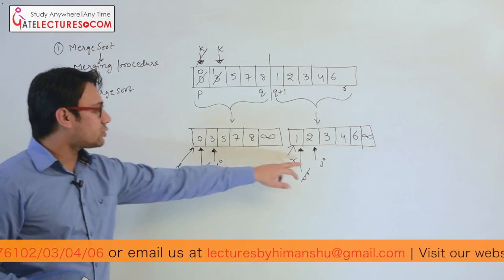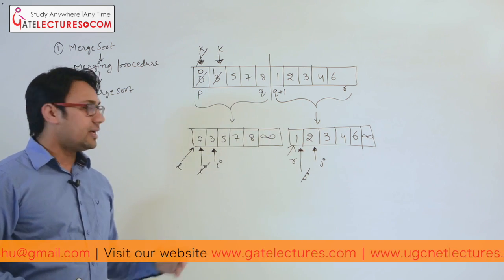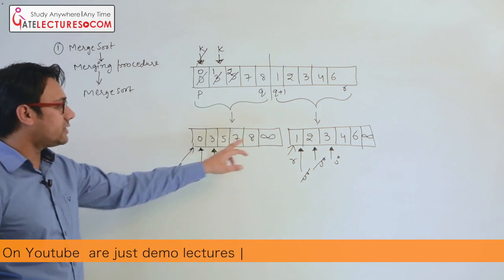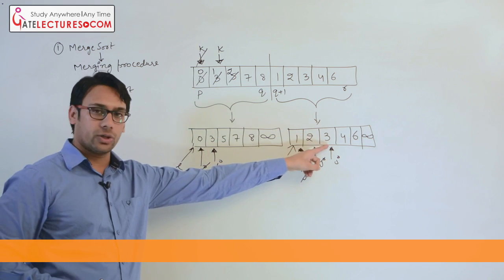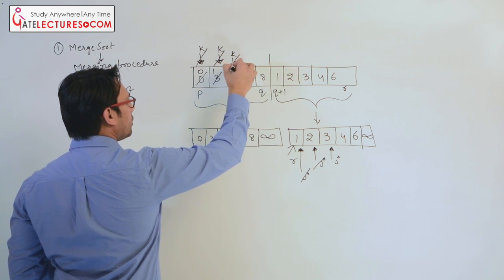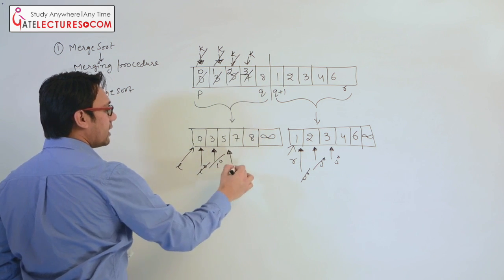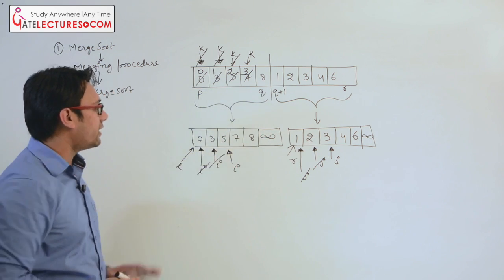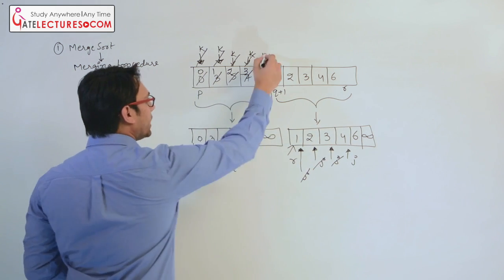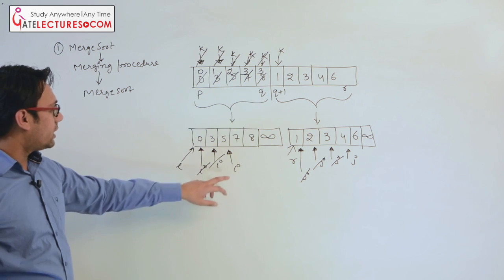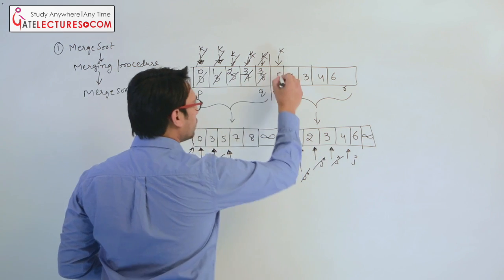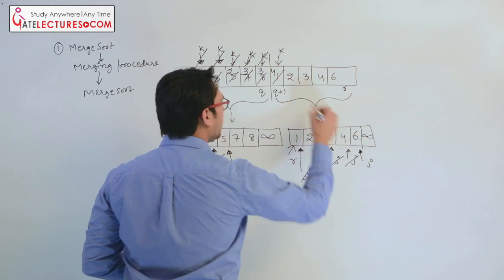Now compare these two values: 2 is less than 3, so we copy 2 here and increment j. Next, compare 3 and 3: since 3 is less than equal to 3 we copy the value from the left array, so this 3 is copied and we increment i. Now 3 is smaller than 5, so we copy 3 here and increment j. Then 4 is less than 5, so we copy 4 here and increment k and j. So j advances and k moves forward.